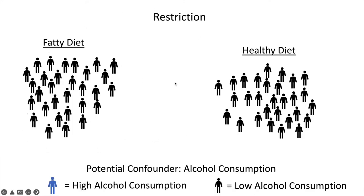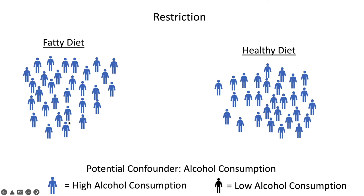The last methodological way to control for confounding is restriction. This is an example where we made it an inclusion criterion to have low alcohol consumption, so everyone in the study has low alcohol consumption. That's another way we didn't permit alcohol consumption to vary by group. We could have done this also by only including those with high alcohol consumption — depending on the nature of the confounder, one or the other might be a better choice.